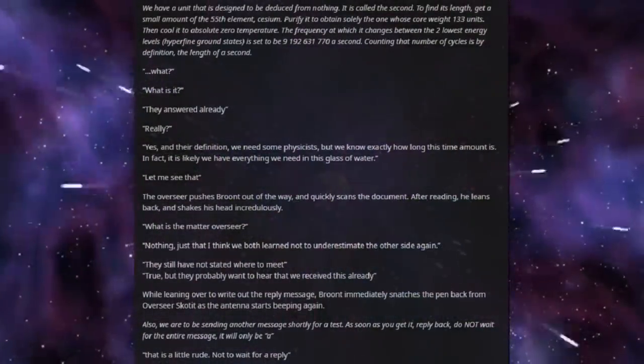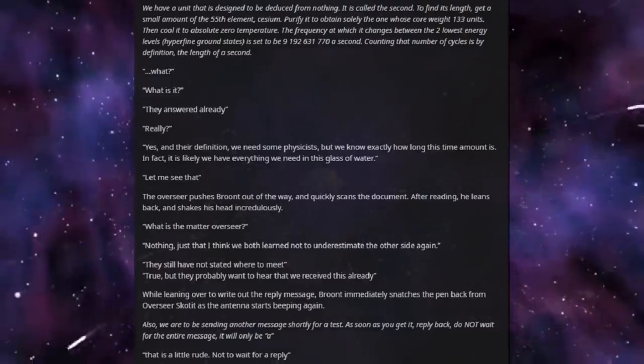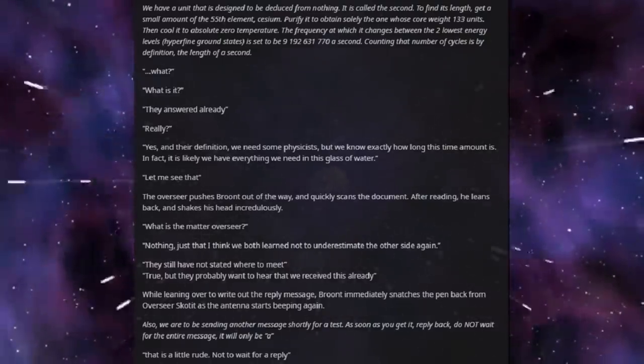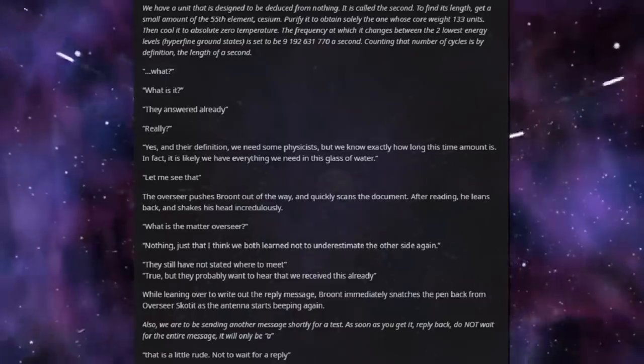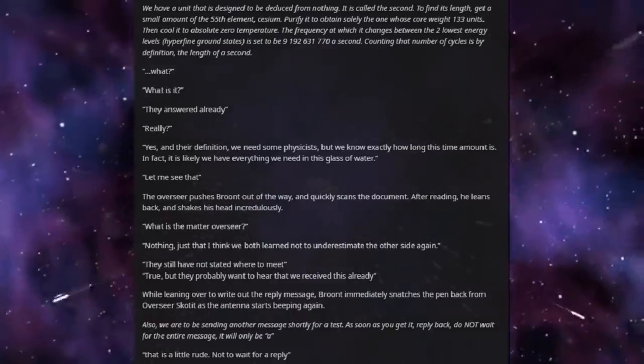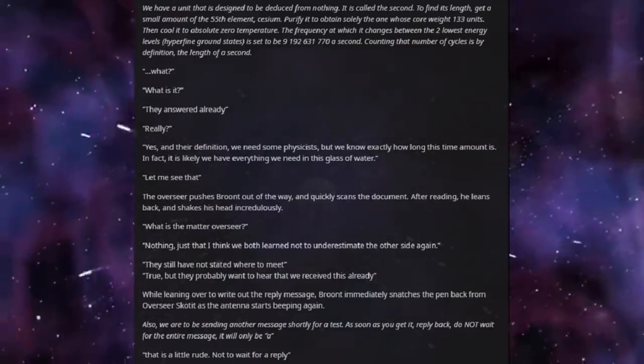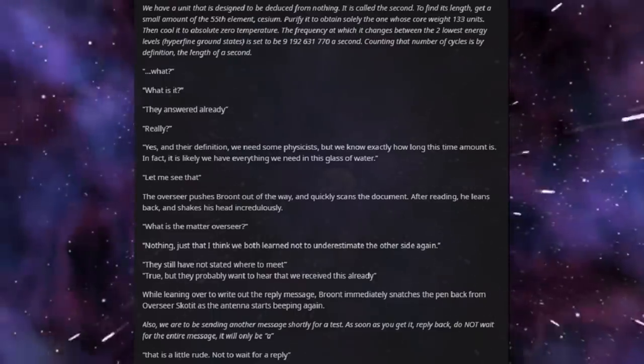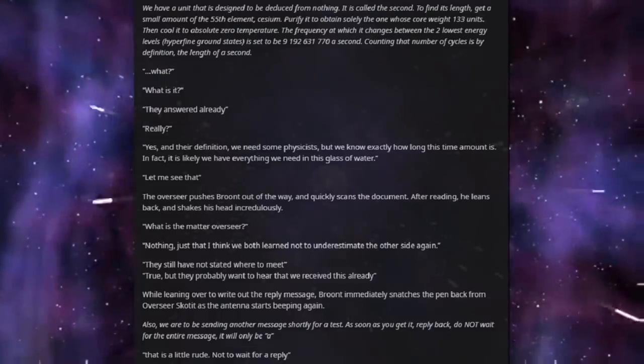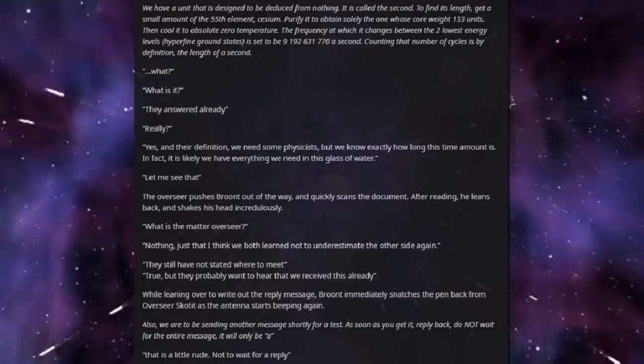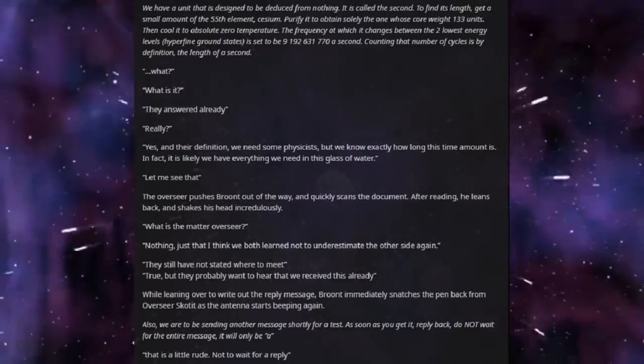We have a unit that is designed to be deduced from nothing. It is called the second. To find its length, get a small amount of the 55th element, cesium. Purify it to obtain solely the one whose core weight is 133 units. Then cool it to absolute zero temperature. The frequency at which it changes between the two lowest energy levels, hyperfine ground states, is set to be 9,192,631,770 per second. Counting that number of cycles is by definition the length of a second. What? What is it? They answered already.